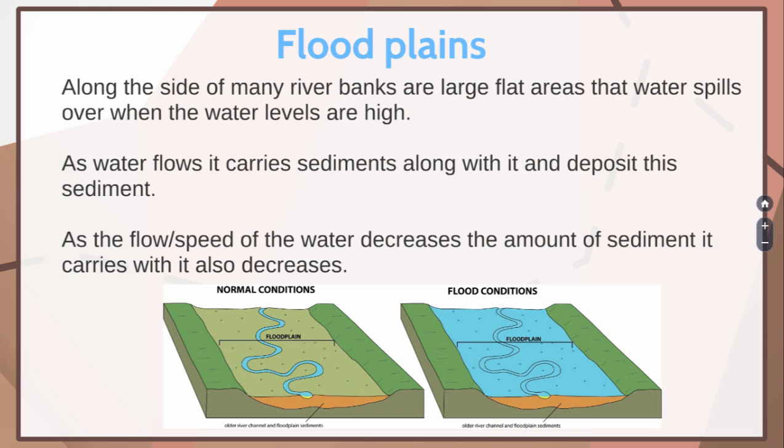We have two diagrams here — normal conditions and flood conditions. On the left, we have normal conditions, and you can see the floodplain — a nice flat area and our little meandering river. The floodplain is nice and flat and the river is not flooding. In flood conditions, the river is going to overflow and fill up this nice flat area, and there are little hills on each side.